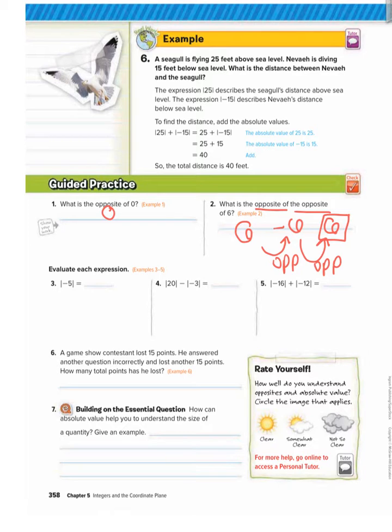Number three: Evaluate each expression. Remember, the lines represent absolute value, which is a number's distance from zero on a number line. So negative five is five units away from zero.